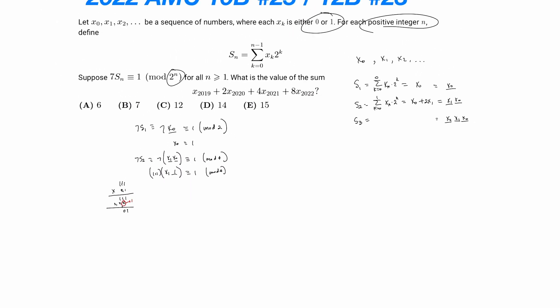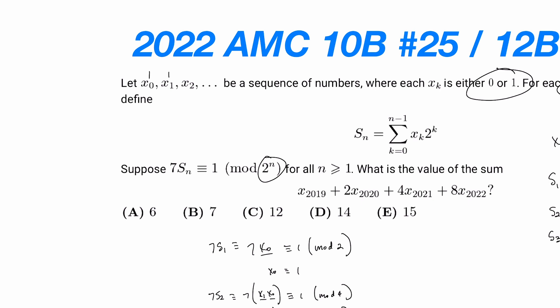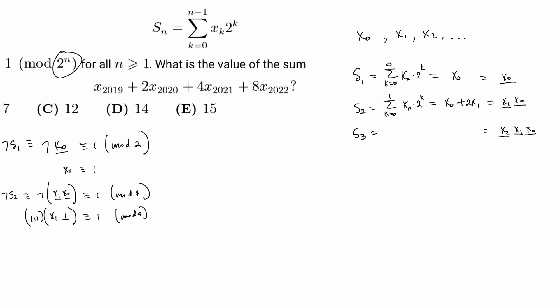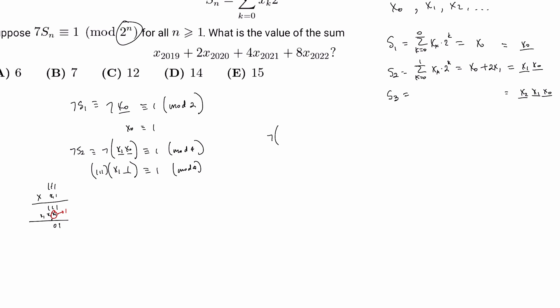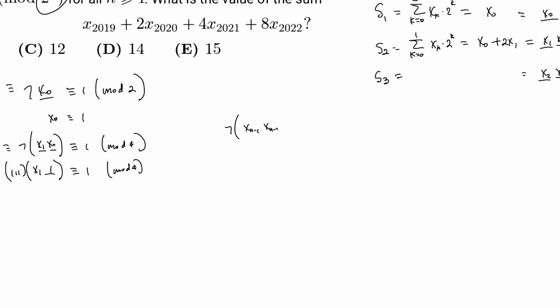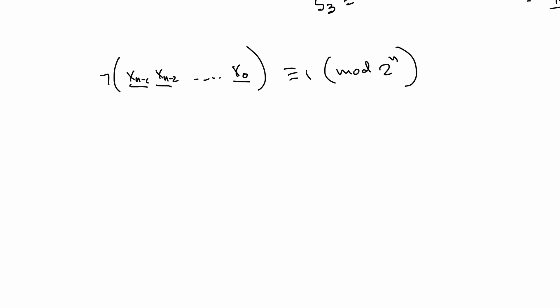You might think this is kind of slow. In competition, I don't really have that much time. So let's try a general form, Sn. 7 times Sn. If you expand Sn, you would have xn-1, xn-2, all the way to x0 as your expansion. And 7 times that is 1 mod 2 to the nth power. So we can expand this to be 111 and just do a normal long multiplication. Just write it out.